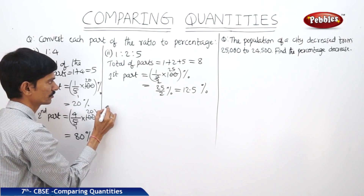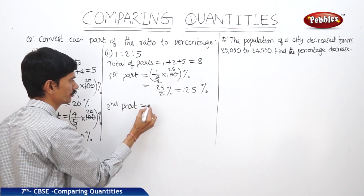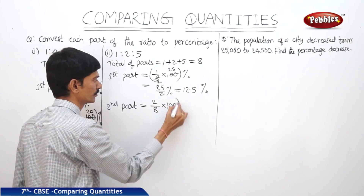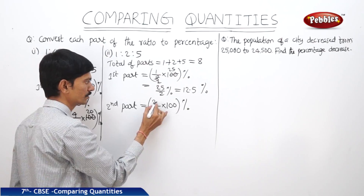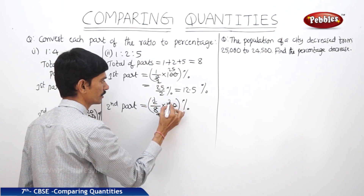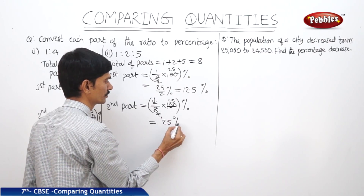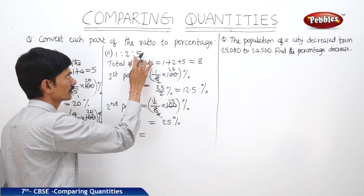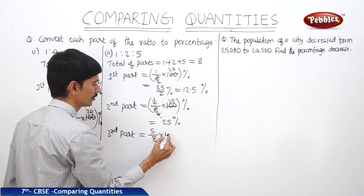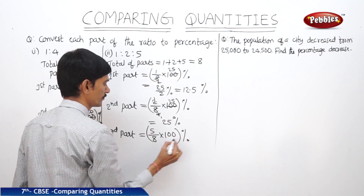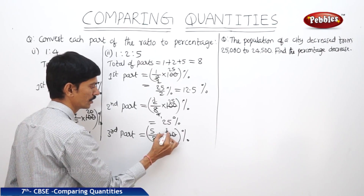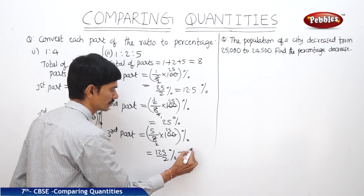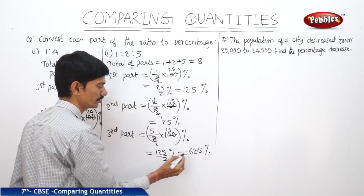Now let us find the second part. The second part equals 2 by 8 into 100%, which simplifies and gives 25%. The third part equals 5 by 8 into 100%, which simplifies to 125 by 2, so this equals 62.5%.